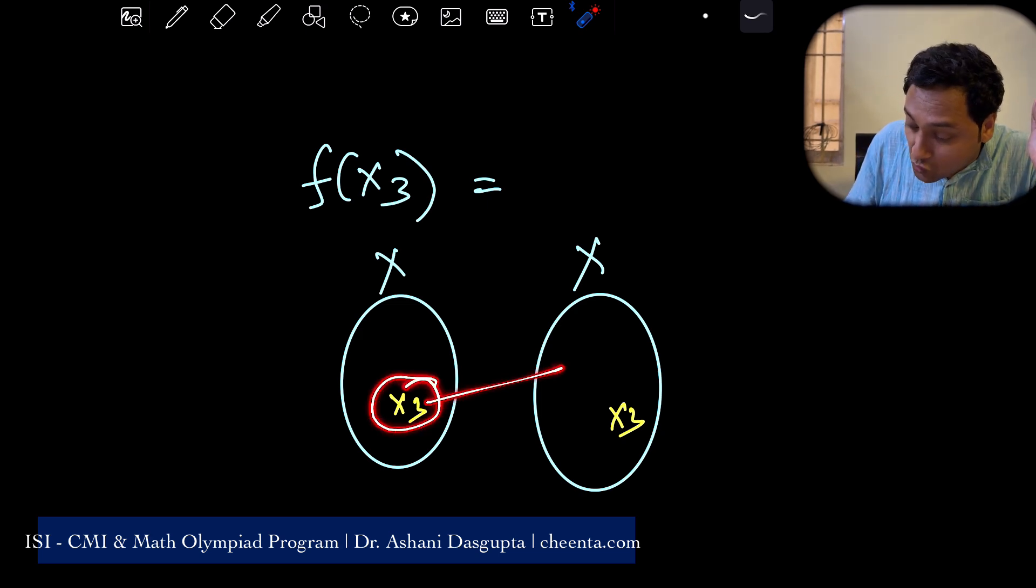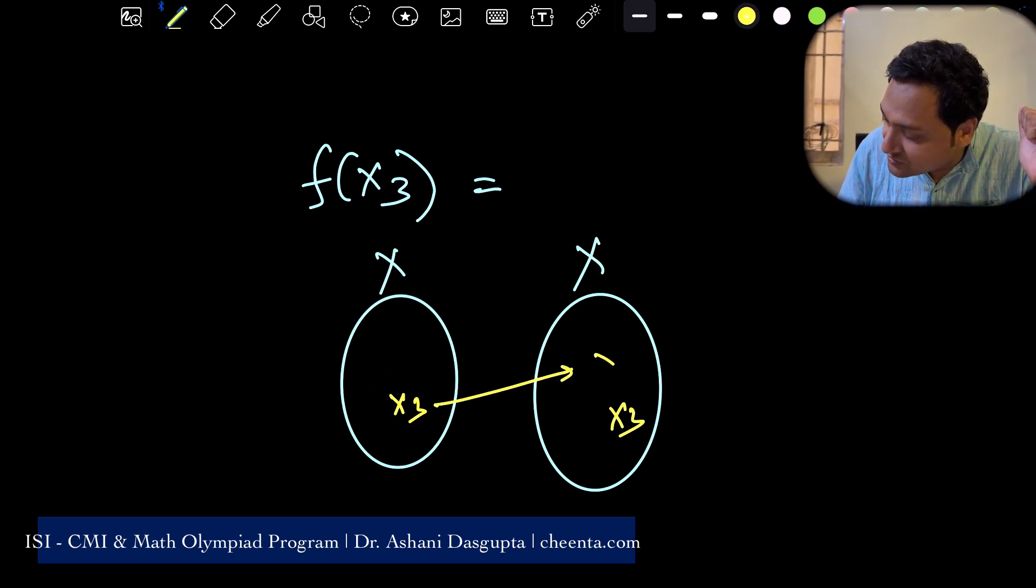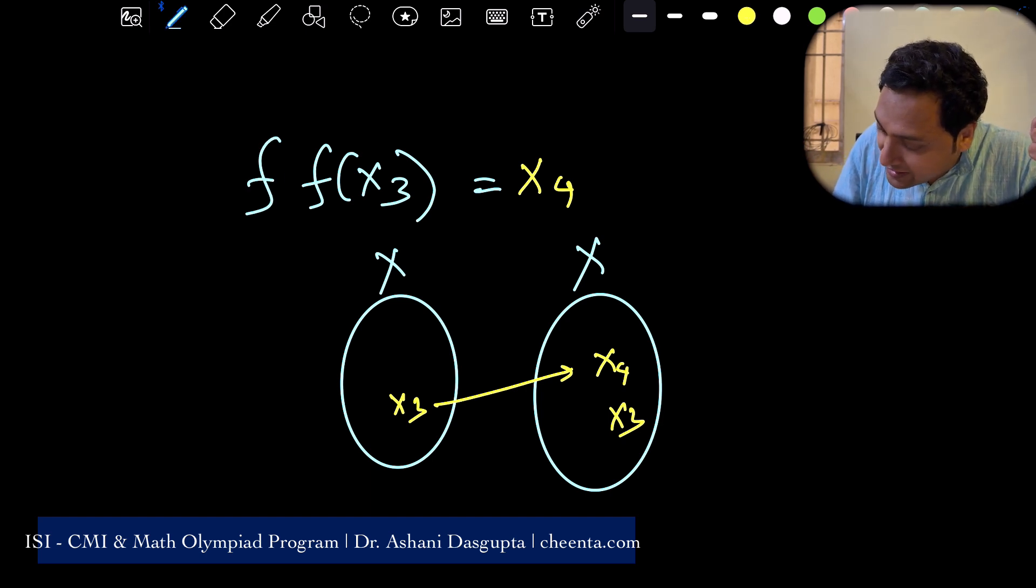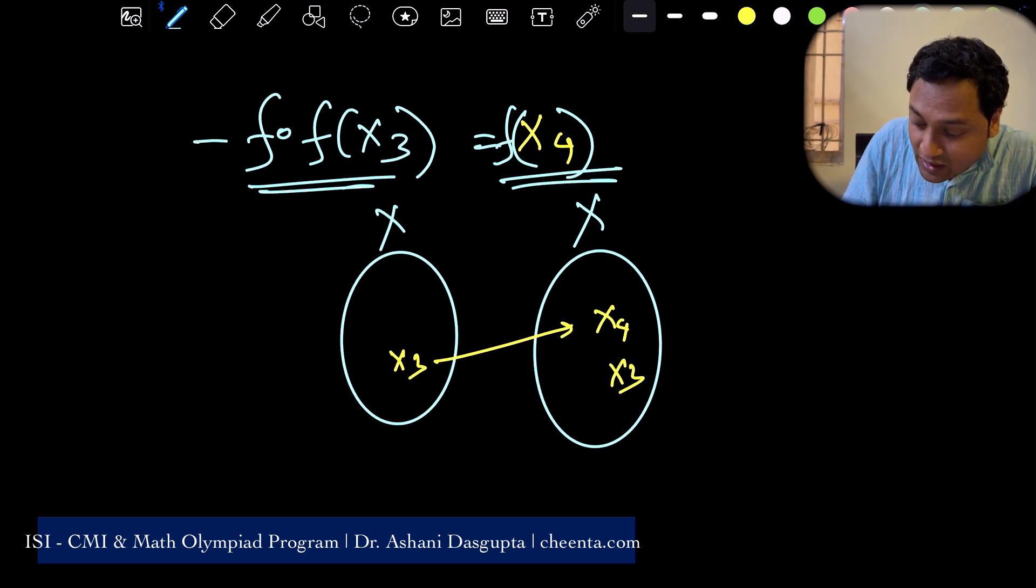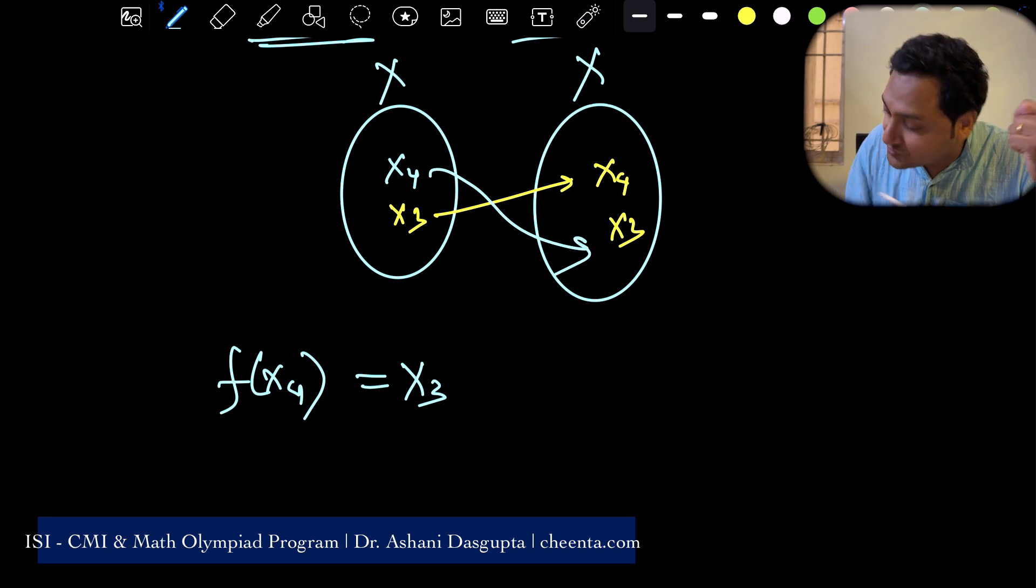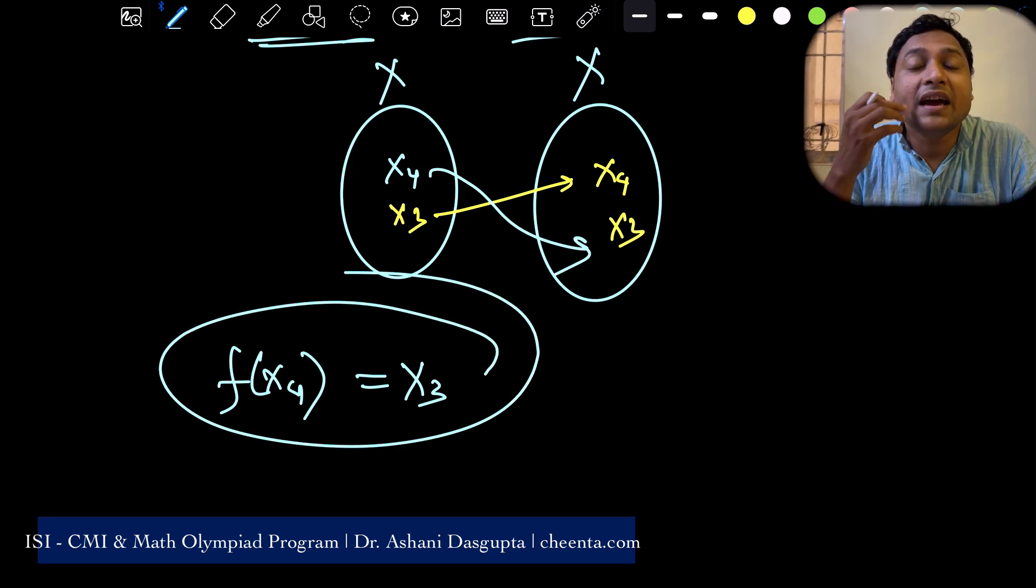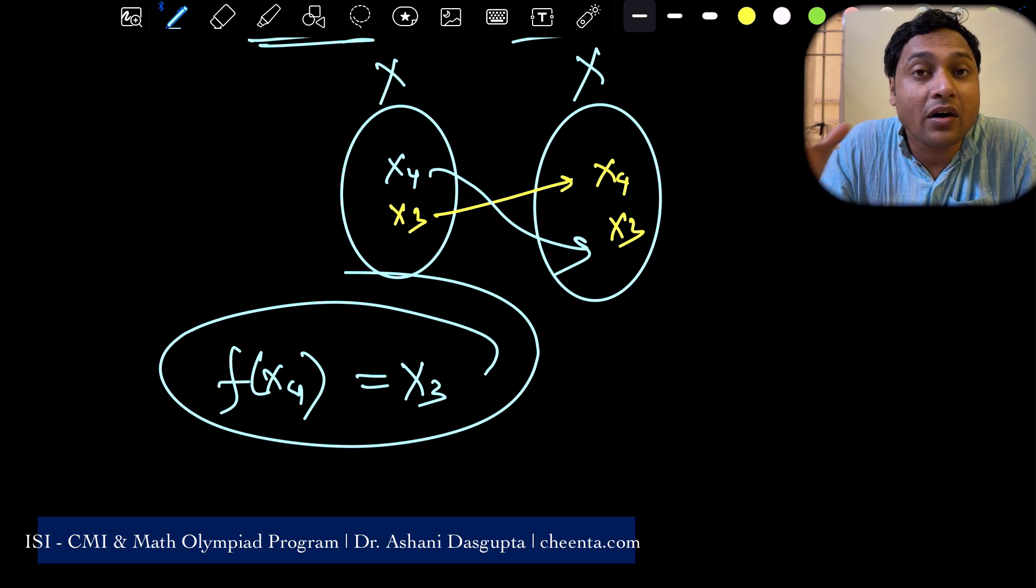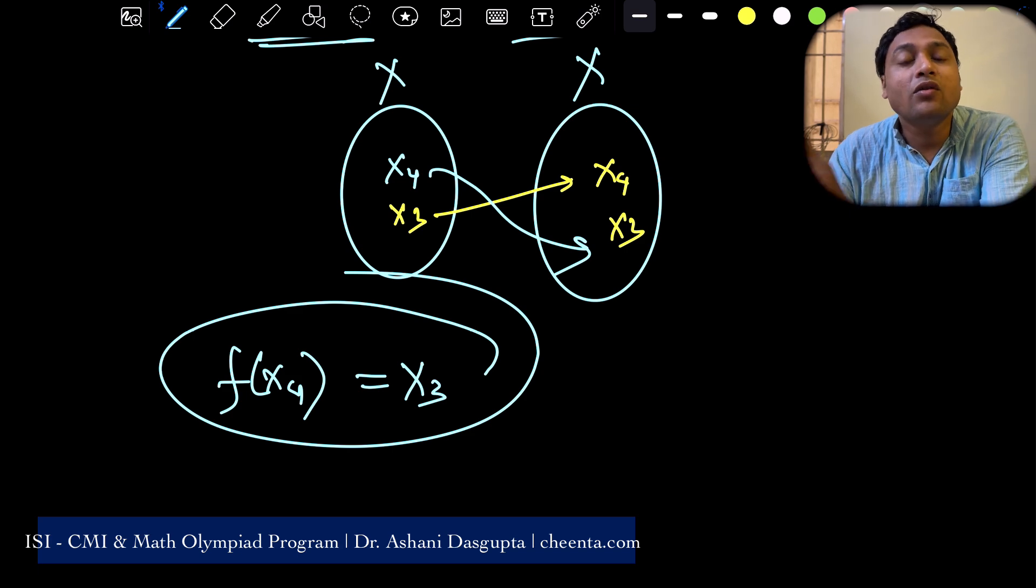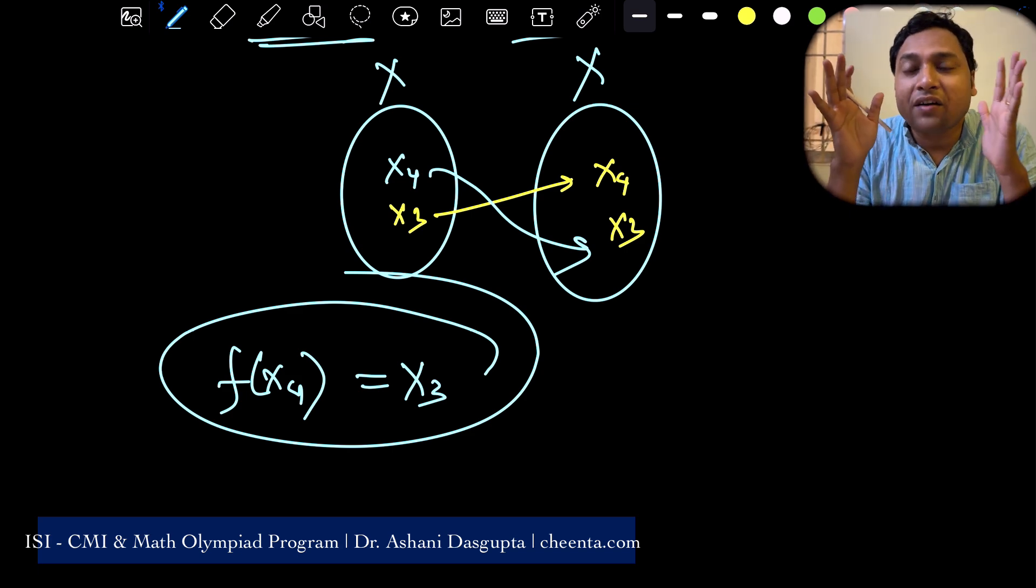Definitely x3 itself is going somewhere. Let's suppose x3 is going to x4. So, f of x3 is x4. Now, let's apply f again. If I apply f again to both sides, what I get is f of x4 and the left hand side is now x3. So, f of x4 is x3. Which means x4 here is mapped to x3. This is awesome. We have found a pre-image of x3. Therefore, given any element in the co-domain, we found a pre-image of that.